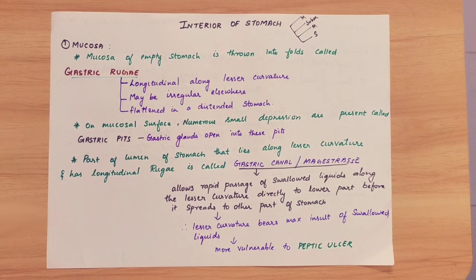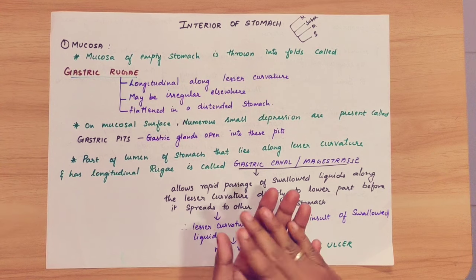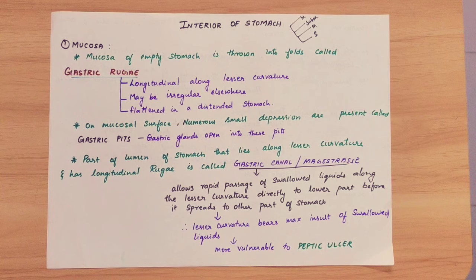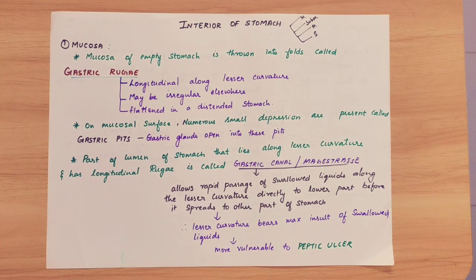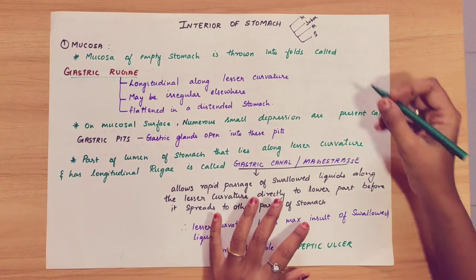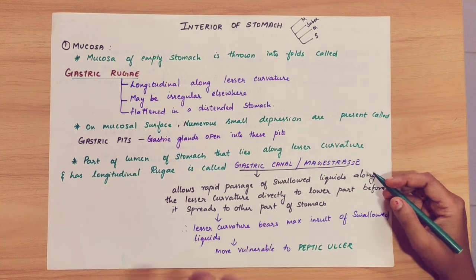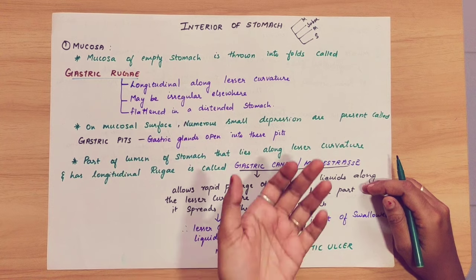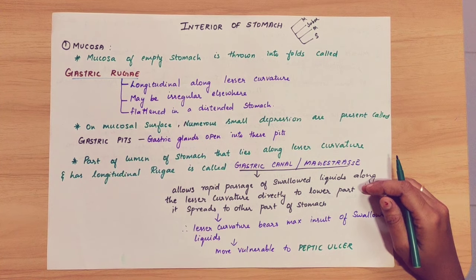The interior of the stomach is cut and open. The stomach has 4 layers of structure. The first layer is mucosa. Mucous is made, submucosa is present, muscles are present, and this is a serous membrane.